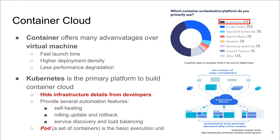Over the past few years, containers have been widely adopted in cloud because of their advantages over virtual machines, including fast launch time, higher deployment density, and lower performance degradation, just to name a few. As shown by recent surveys, most container clouds are based on Kubernetes, a container orchestrator developed by Google, which hides infrastructure details from developers and provides automation features like self-healing, rolling update, service discovery, and load balancing to speed up the CI/CD process and reduce management efforts.